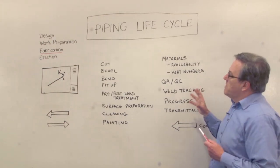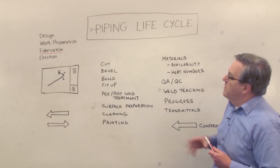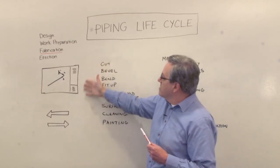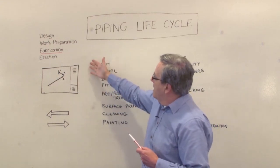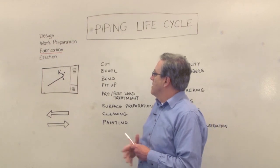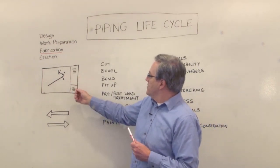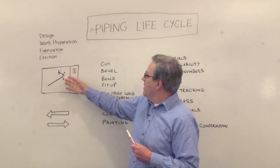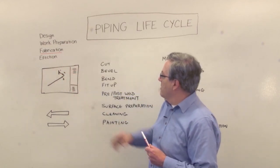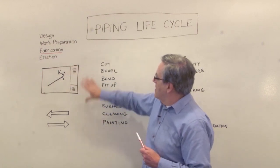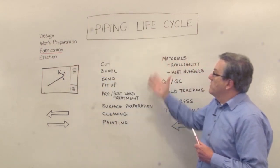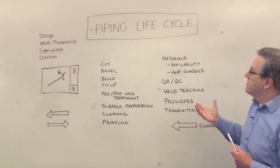We're now actually in the pipe fabrication shop, and our job is essentially to make these spools. Here we have a typical spool drawing, and as you can see, it's a pretty typical pipe spool. It's got a section of pipe, an elbow, a flange, and a number of welds. The information behind this drawing is going to help us manage all these different operations that we have to do.